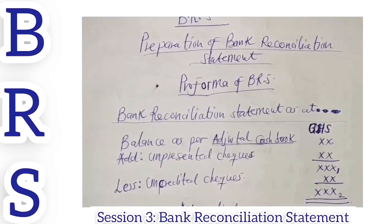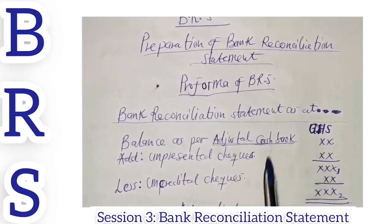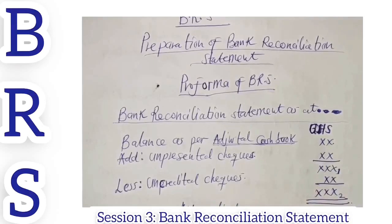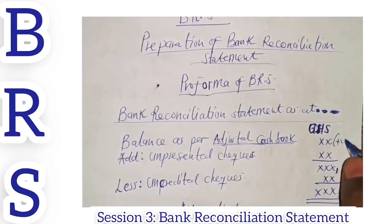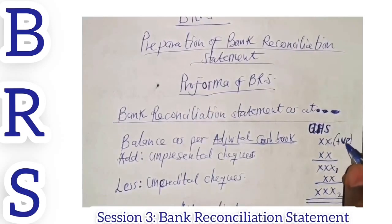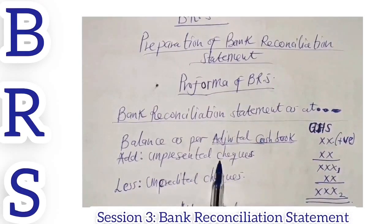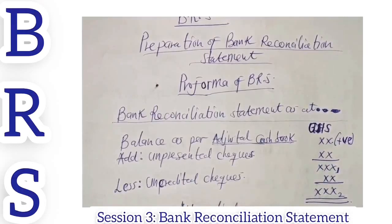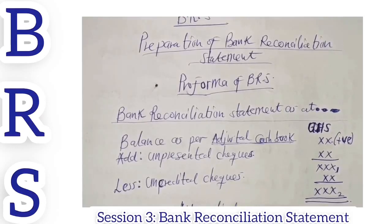The first approach: if you have to use the adjusted cash book, the balance in this case is a favorable balance — that is, a positive balance. If it is a positive balance, you start your bank reconciliation statement with that adjusted cash book balance, then you add your unpresented checks to that positive balance, and then you deduct your uncredited checks. That is very simple and straightforward.